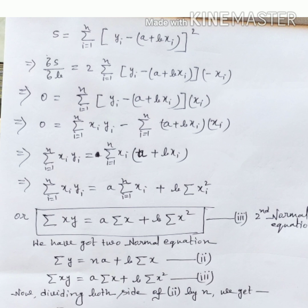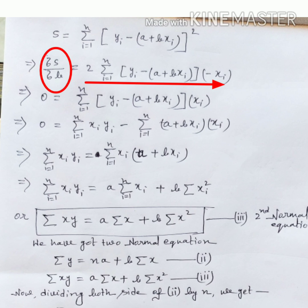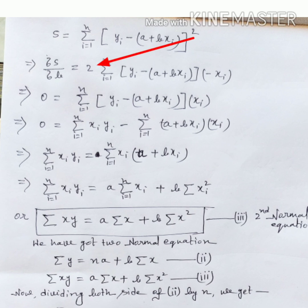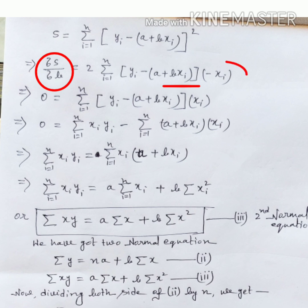To find the second normal equation we apply the partial derivative with respect to b: ∂S/∂b = 2 · Σ(i=1 to n) (y_i − (a + bx_i)) · (−x_i). By the chain rule, differentiating with respect to b, the term bx_i leaves −x_i, so we get 2 · Σ(i=1 to n) (y_i − (a + bx_i)) · (−x_i).